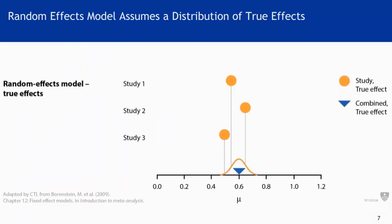Under the random effects model, we assume there is a distribution of true effects. Remember, under the fixed effect model we assumed all studies are identical and there is only one true effect. Here, instead, we assume there is a distribution of true effects.